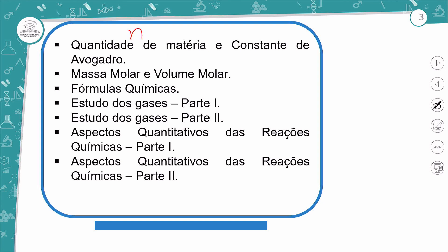Depois nós vamos ver sobre quantidade de matéria — que vocês vão encontrar muito com o nome mol — e constante de Avogadro. Vamos conhecer massa molar e volume molar, as fórmulas químicas para determinar a fórmula mínima percentual, os estudos dos gases e os aspectos quantitativos das reações químicas. Aí a gente fecha a nossa unidade 3 e vamos para a avaliação.